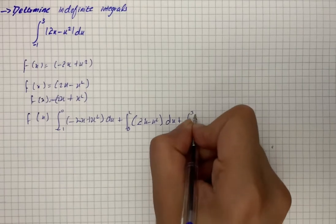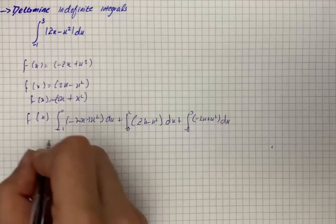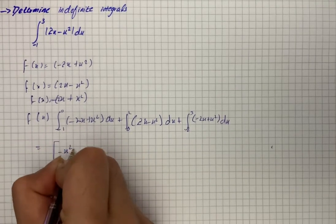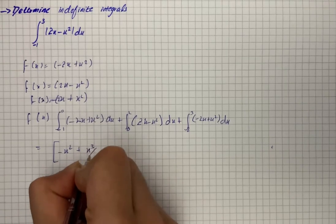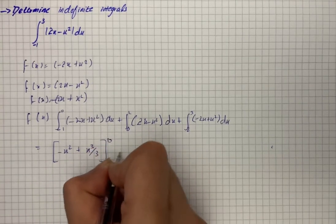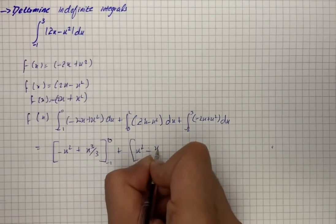So on simplification we have minus x squared plus x cubed by 3 from negative 1 to 0, plus x squared minus x cubed by 3 from 0 to 2, plus minus x squared plus x cubed by 3 from 2 to 3.